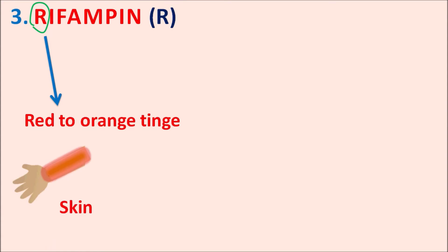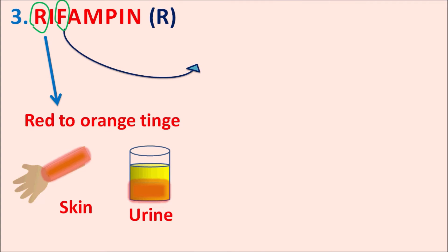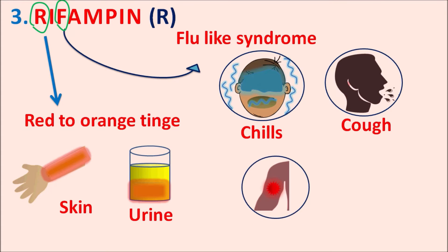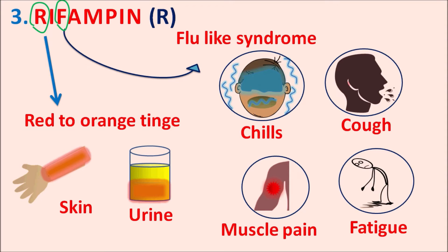Rifampin, indicated by R, produces a red to orange tinge to the skin, urine, saliva, and other mucus secretions. This discoloration is especially observed with increased doses. Another key side effect — remembered via the letter F in rifampin — is flu-like syndrome: chills, increased cough, muscle weakness, and fatigue. Rifampin can also produce hepatotoxicity and elevate liver enzymes.